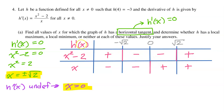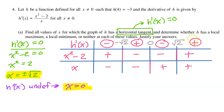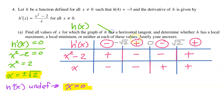Now for the overall sign of h prime: in the first interval, a positive divided by a negative is negative. In the second interval, a negative divided by a negative is positive. Then a negative divided by a positive is negative, and a positive divided by a positive is positive. The derivative tells us whether the original function is increasing or decreasing. So h is decreasing, then increasing, then decreasing, then increasing across the four intervals.